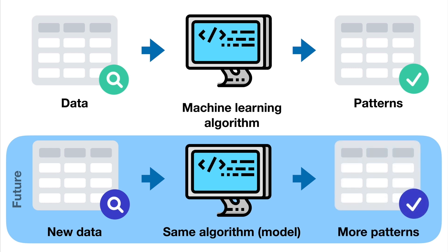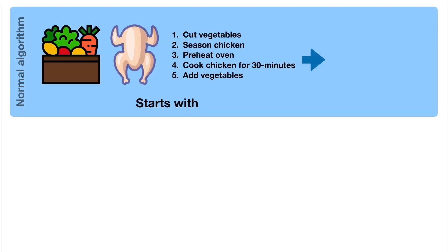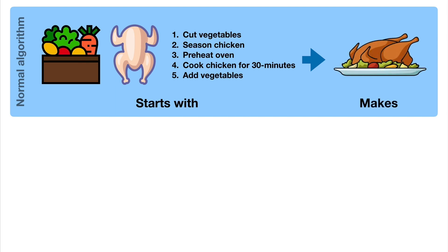How machine learning algorithms differ from normal algorithms and computer programs is the learning aspect. A normal algorithm could be a set of instructions, such as how to turn a pile of raw ingredients into your favourite honey mustard chicken dish. The set of instructions might start out by saying: first cut up the vegetables, then season the chicken, then preheat the oven, etc. And if you follow these steps correctly, you'll end up with your favourite honey mustard chicken dish.